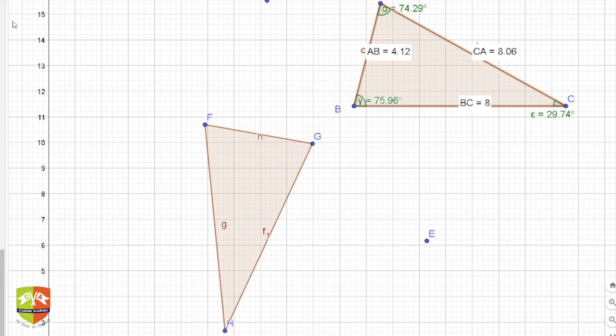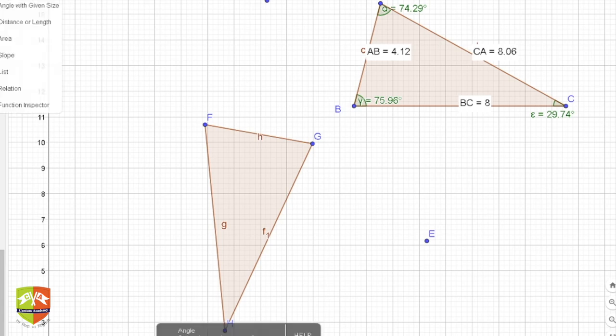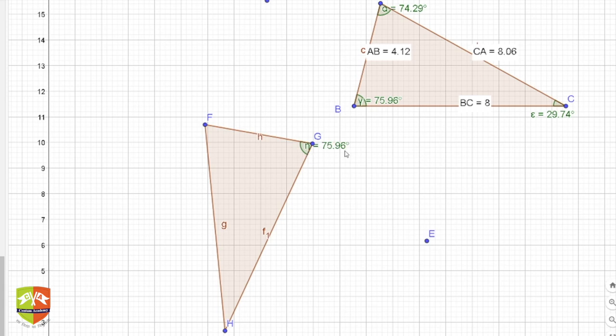Let's measure the angle between F, G, and H. This angle is 75.96°, which corresponds to point B. Angle A is 74.29°, so A and F are corresponding, and clearly H and C are corresponding. They have the same angles. Now if I measure the distance between F and G, it exactly matches AB. FH is 8.06 which equals AC, and GH is 8 which equals BC.